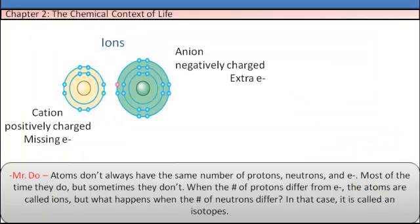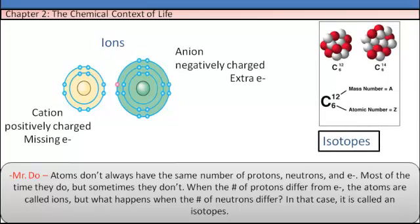Atoms don't always have the same number of protons, neutrons, and electrons. Most of the time they do, but sometimes they don't. When the number of protons differ from the electrons, the atoms are called ions. But what happens if the number of neutrons differ? In that case, it's called isotopes.